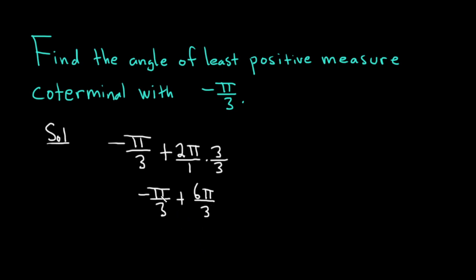So now we can add these. Negative pi over 3 plus 6 pi over 3 is equal to 5 pi over 3.